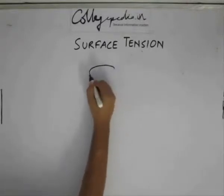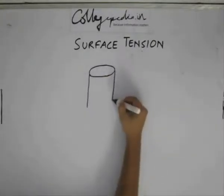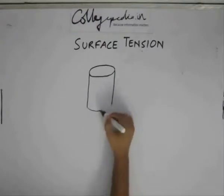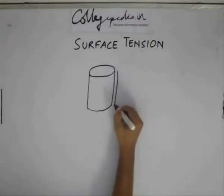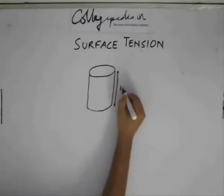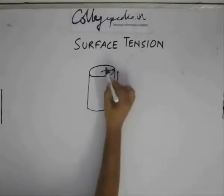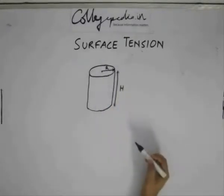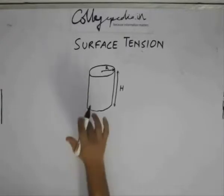So what we have is a cylinder like this. Say the height of this cylinder is h, the radius is say r. What we are supposed to find out is the same: we have to find out the excess pressure residing within this cylindrical fluid drop.